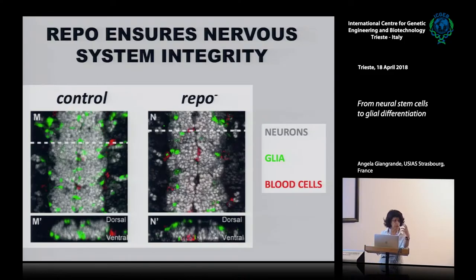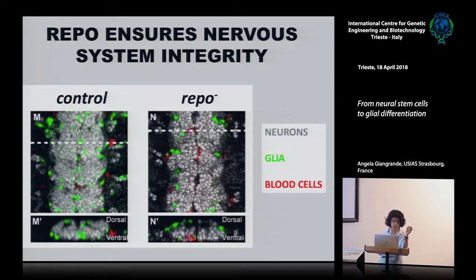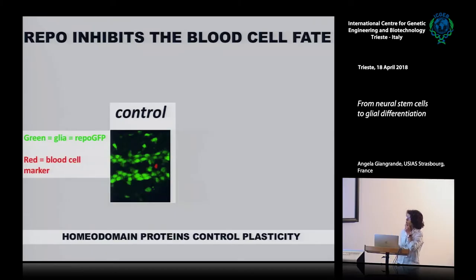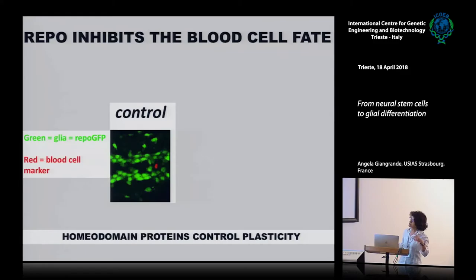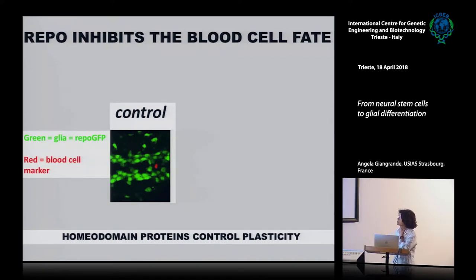You simply need this homeodomain-containing protein to stay on and express the late markers. This is again the wild-type embryo showing the ventral cord with neurons, glial cells, and hemocytes. The mutant I was alluding to is REPO, and in these animals you see total disruption of the ventral cord. We knew the late markers for glia were not expressed. But more recently, we revisited this phenotype and realized that in REPO mutant embryos — where REPO is the only protein expressed in all glial cells — we start seeing something unexpected. In the REPO mutant, some cells that we can trace using a REPO promoter-GFP reporter start expressing a blood cell marker — a transcription factor specific for building hemocytes.